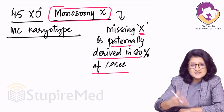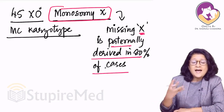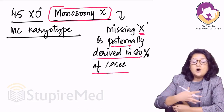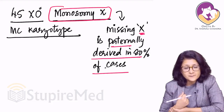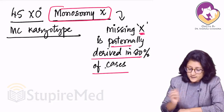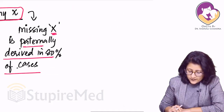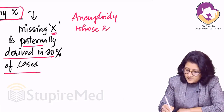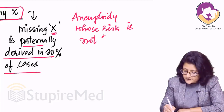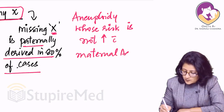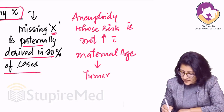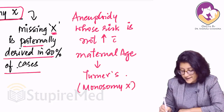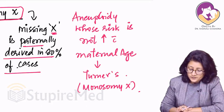Similarly, we have trisomy 16, 18, 21 — Down syndrome — all of these are aneuploidies. The risk of Down syndrome, trisomy 21, 16, and 18 all increase with increasing age of the mother. However, Turner syndrome is one aneuploidy whose risk is NOT increased with maternal age. That is a very important point to remember.